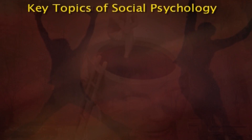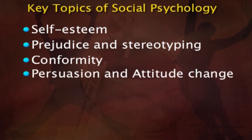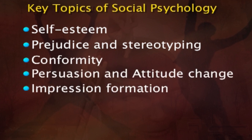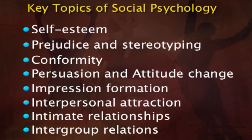During the 1950s and 60s, social psychology grew and flourished, moving towards an integrated theoretical understanding of social and cognitive processes. Furthermore, social psychological research and theory was applied to important practical problems. Research contributions during this period laid the foundation of key topics within social psychology such as self-esteem, prejudice and stereotyping, conformity, persuasion and attitude change, impression formation, interpersonal attraction, intimate relationships, and intergroup relations.